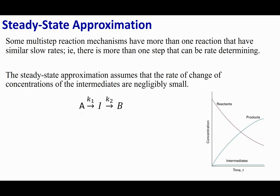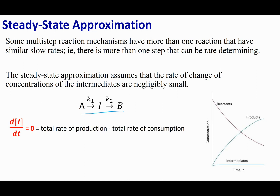Let's go ahead and take a look at this equation right here. My overall reaction is A going to B, and this is going to happen in two steps: A is going to make this intermediate I, and then I is going to turn into B, my products. Now, what the steady state approximation says is that the concentration of that intermediate is going to be steady — or in other words, the change in concentration of my intermediate over time is zero, or it doesn't change.